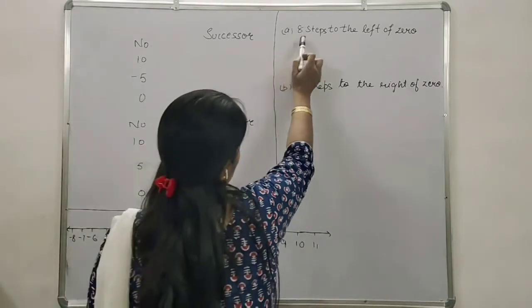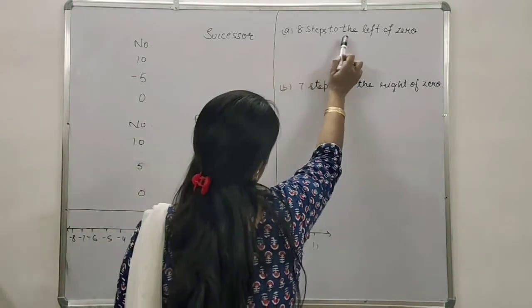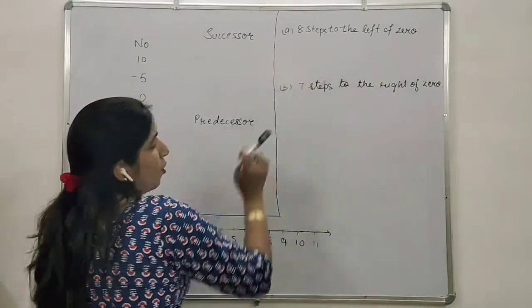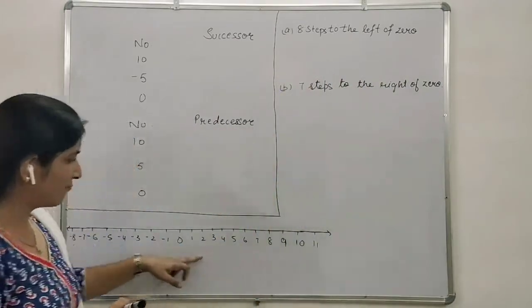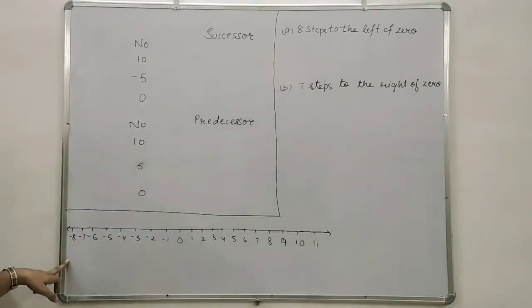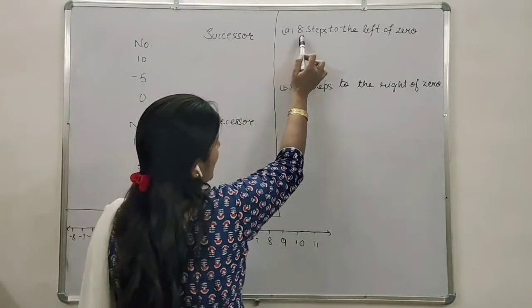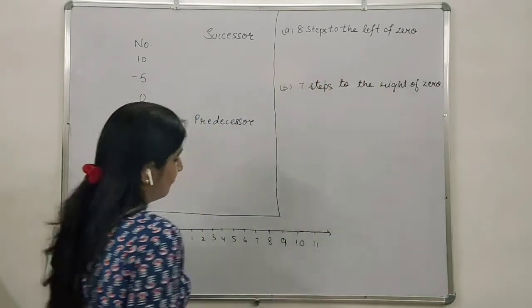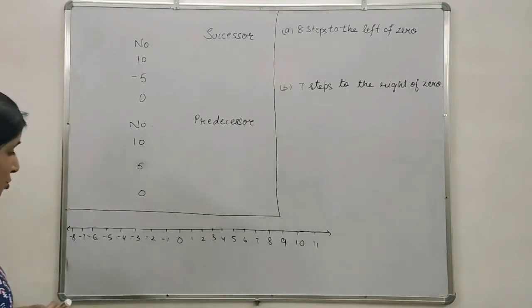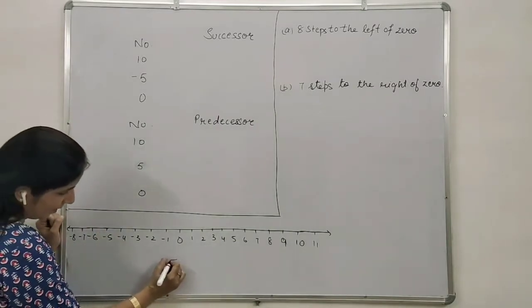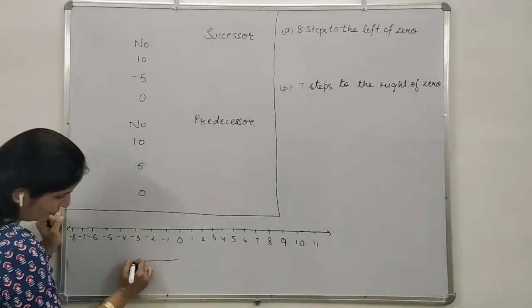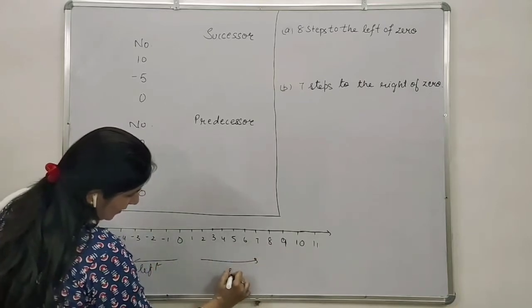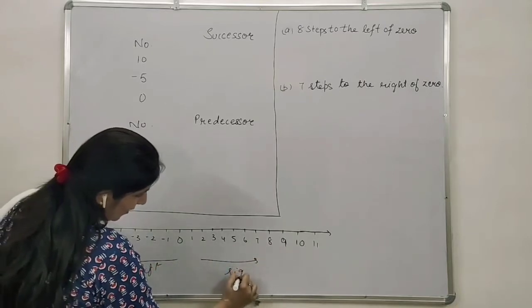First is 8 steps to the left of zero. These things we are going to do on this number line. I have drawn the number line here. The question is, 8 steps if we move to the left of zero. So, what is the left? When we move this side, this is your left. And when we move this side, this is right.